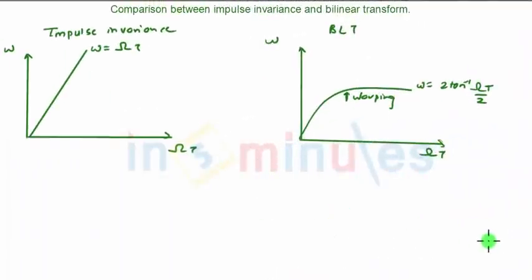If you compare the graphs of impulse invariance and BLT, you can observe the frequency warping effect present in BLT. These are the seven points comparing impulse invariance and bilinear transformation. Thank you.